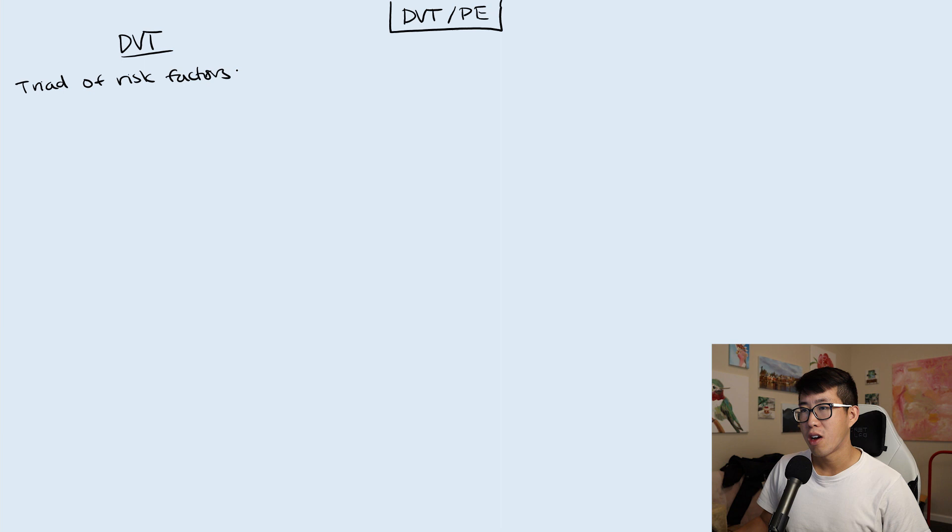You may remember this from medical school, but this describes three different things: hypercoagulable state, venous stasis, and endothelial injury. This is definitely a PIM question that you might get asked.